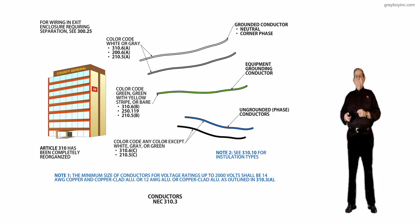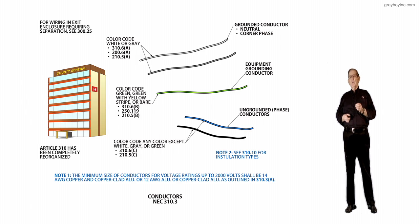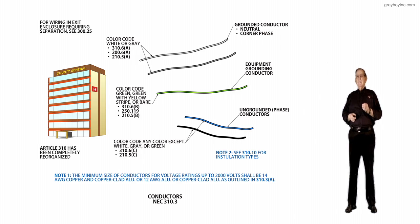The note one now tells you that the minimum size of conductors for voltage ratings up to 2,000 volts should be number 14 AWG copper and copper clad aluminum or number 12 for aluminum or copper clad aluminum as outlined in 310.3A. They're giving you the specific requirements here so that we don't make mistakes. And the note two says if you want to know how to use this insulation, go to 310.10 and it will tell you exactly the type of insulation you would have to use in damp, dry or wet locations or exposed to the sun.